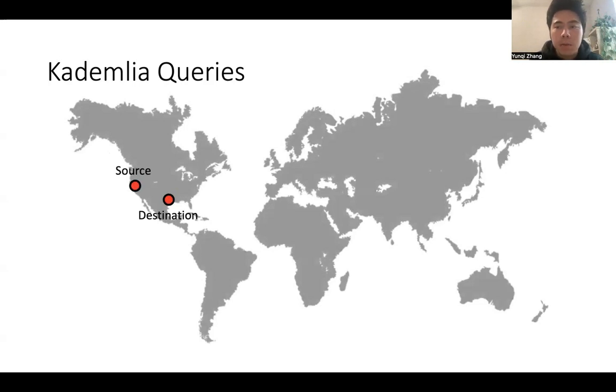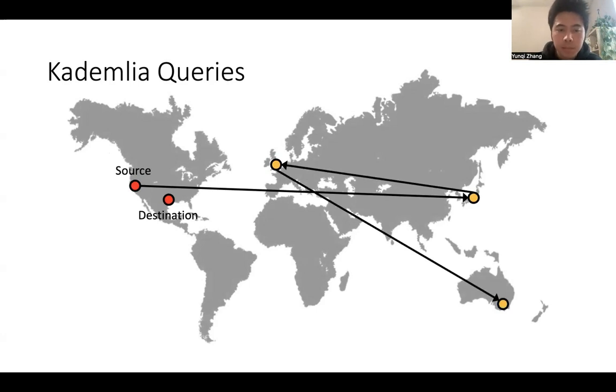In vanilla Kademlia, queries can be very inefficient. Suppose we have a source node in California, and a destination node in Texas. The first hop may be going to Japan. The second hop can go to London. The third hop can go to Sydney. And finally, we reach the destination in Texas. We have this kind of zigzag, which is very inefficient.